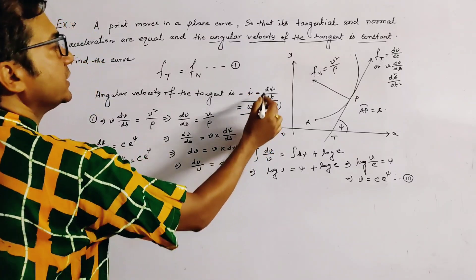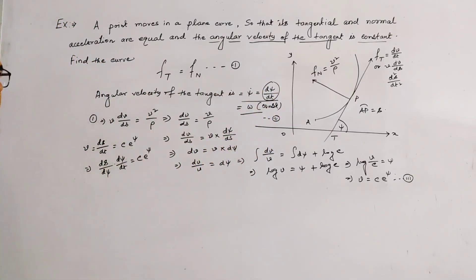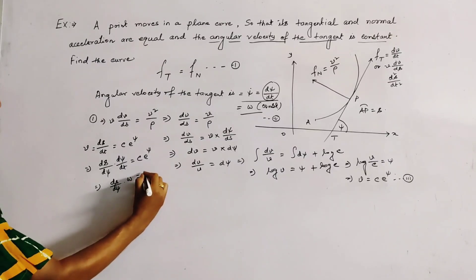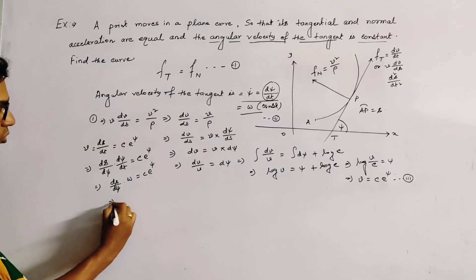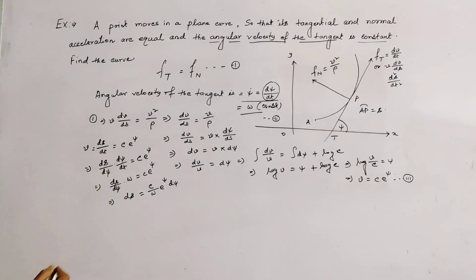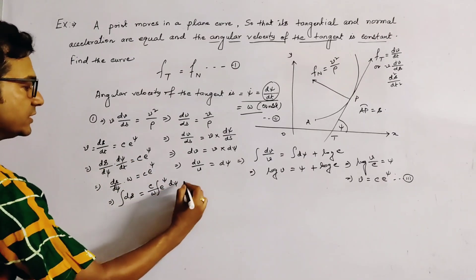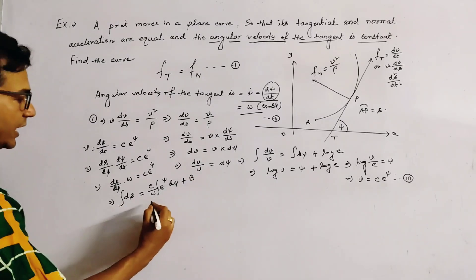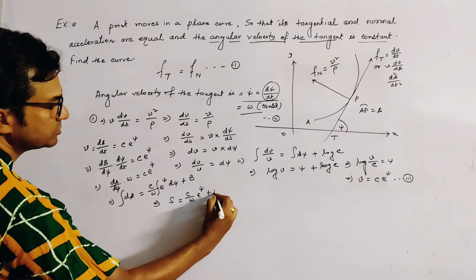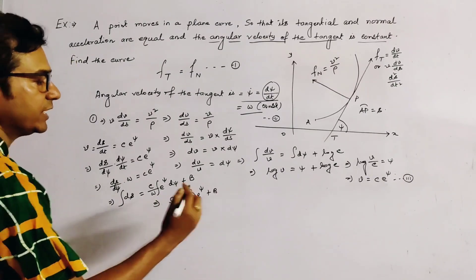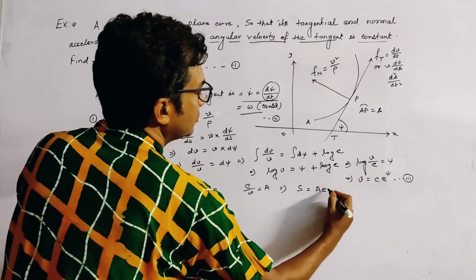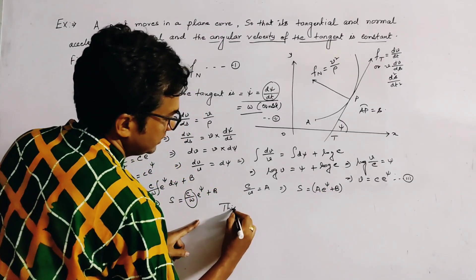From relation (2), ψ-dot = dψ/dt = ω, which is constant. So we write ds/dψ · ω = c·e^ψ, giving ds = (c/ω)·e^ψ·dψ. Integrating both sides, with constant b: s = (c/ω)·e^ψ + b. Putting c/ω = a, we get s = a·e^ψ + b.